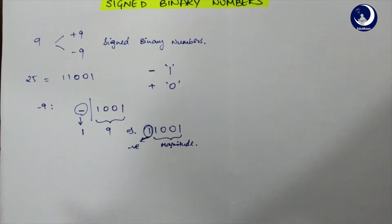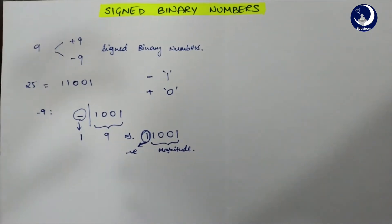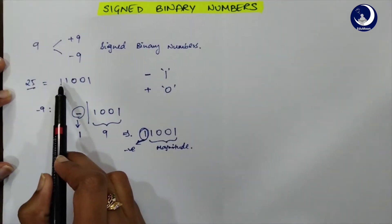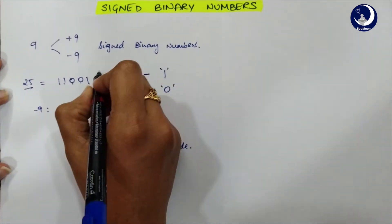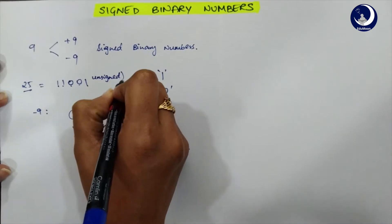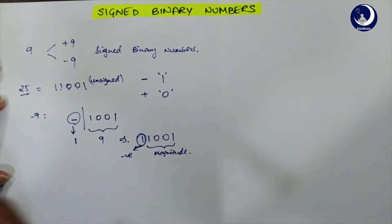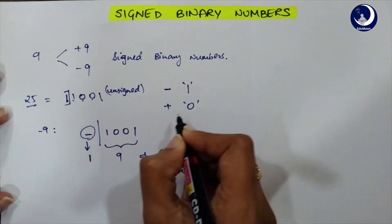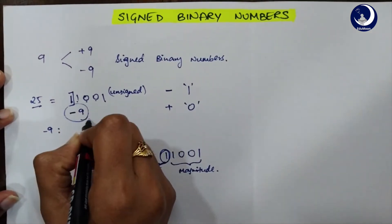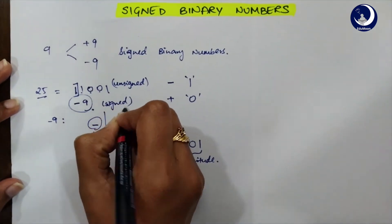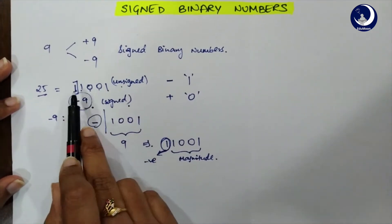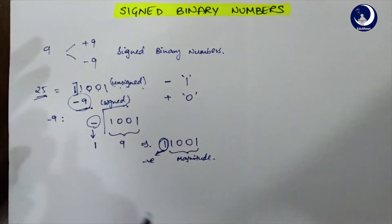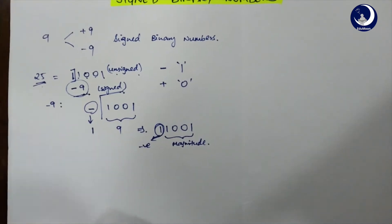There are many ways to represent signed binary numbers, but before getting into those notations let's look at unsigned binary numbers. For example, 25 is represented as 1 1 0 0 1 as an unsigned binary number. But when we consider the leftmost bit as the sign bit, where 1 stands for negative, the same pattern 1 1 0 0 1 becomes minus 9 in signed representation. So there is a big difference between unsigned and signed — the value changes from 25 to minus 9.